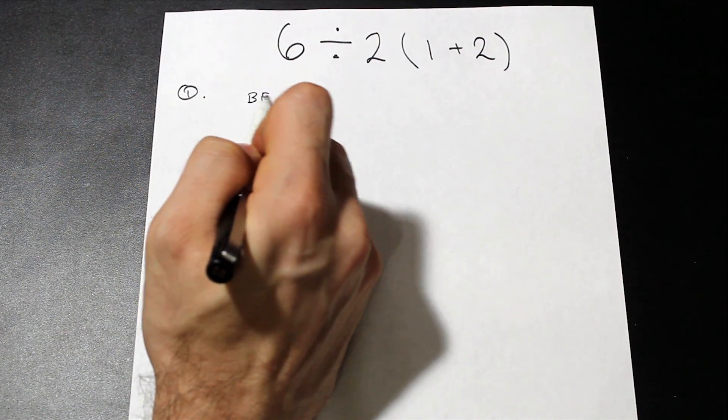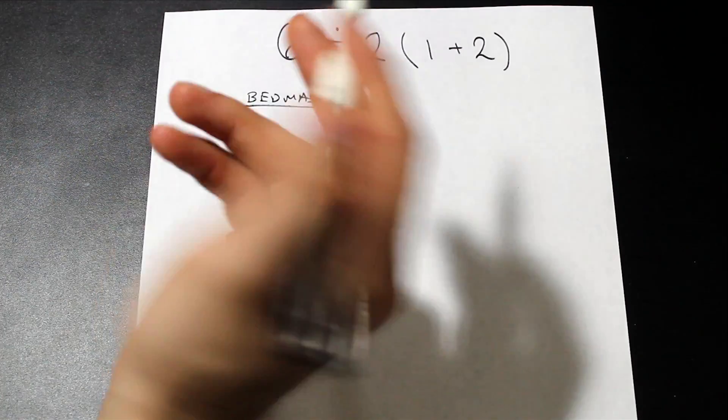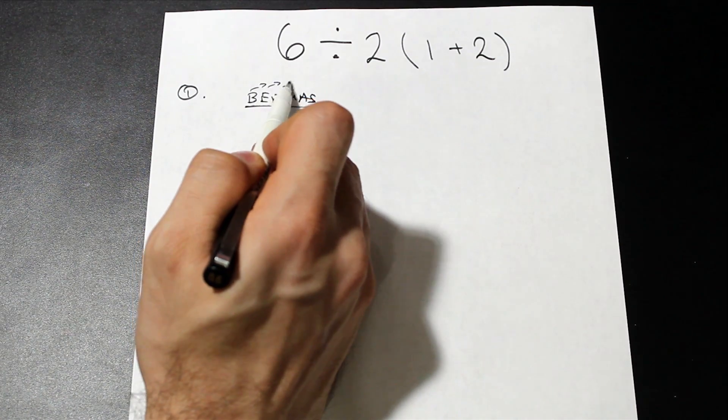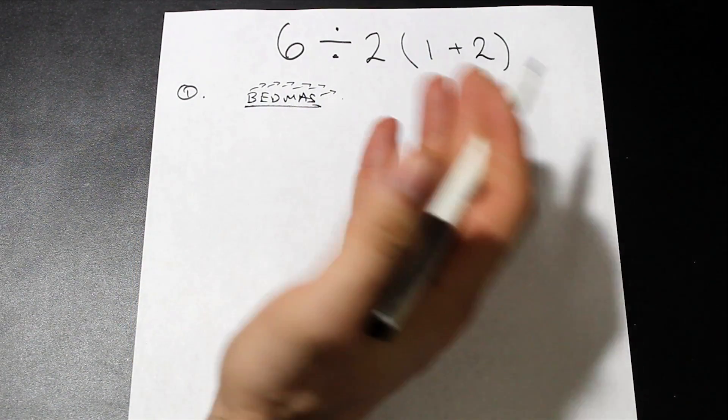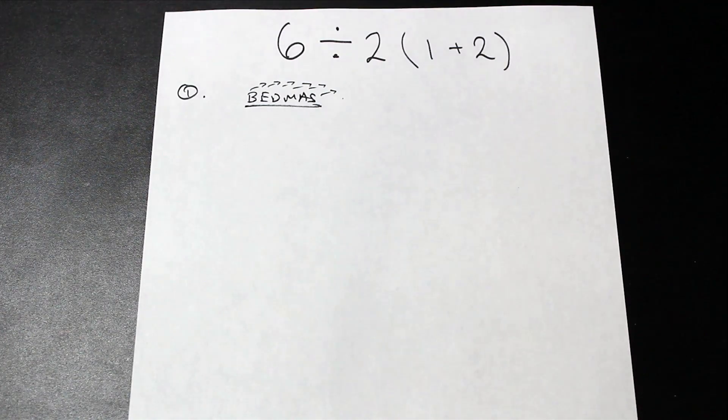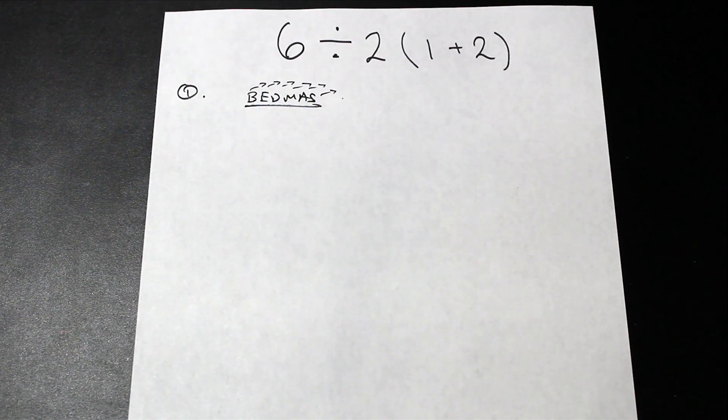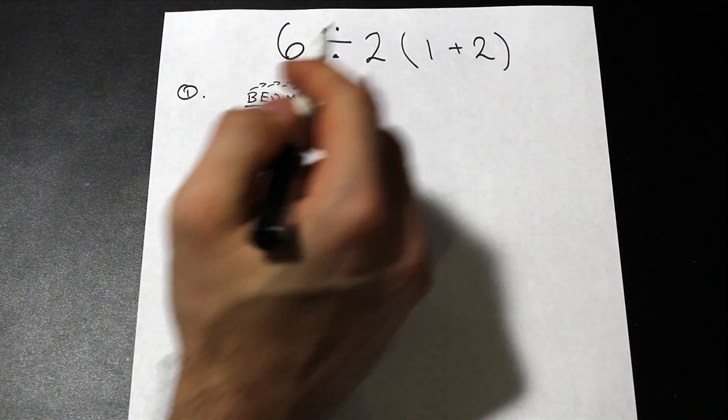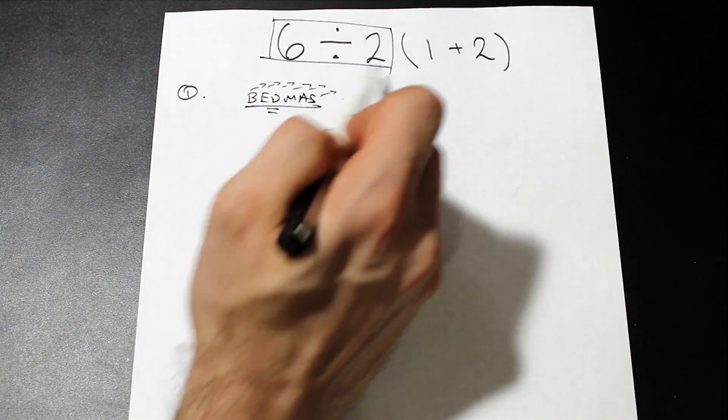The first way is by using BEDMAS. If you're not familiar with BEDMAS, it's essentially the order of operations: brackets, exponents, division, multiplication, addition, and subtraction. These are the order in which we are taught as students in grade school to complete mathematical operations. We're supposed to complete them from left to right, and as you'll see here, division comes first before multiplication.